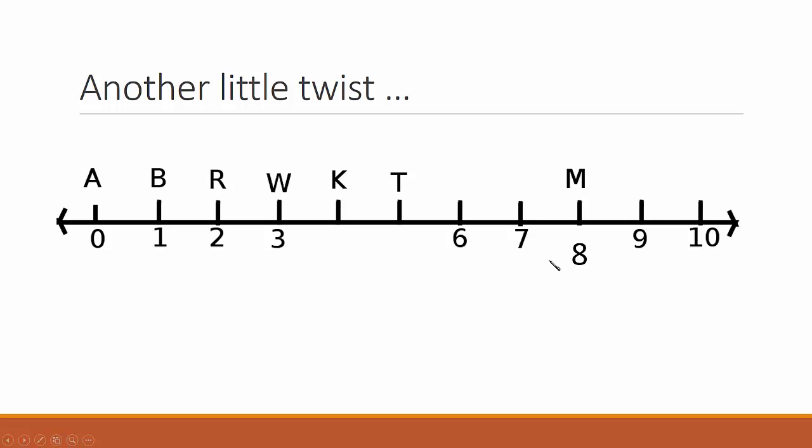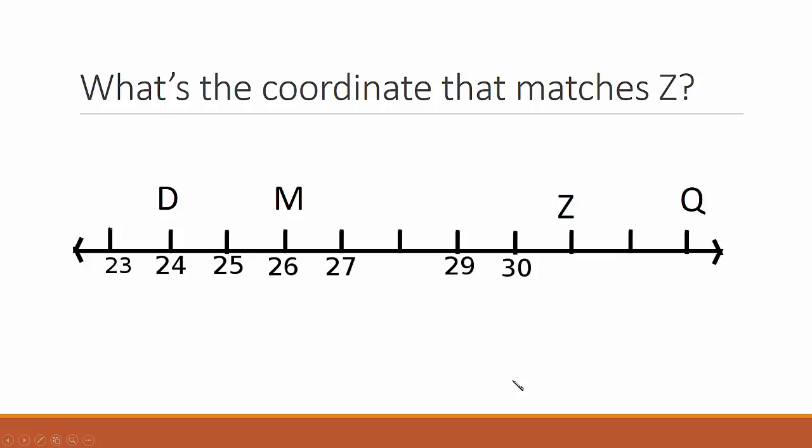Now let's mix things up a little more. What's the coordinate that matches Z? That would be 31. What about Q? We have to count by ones since that's the unit: 31, 32, 33.